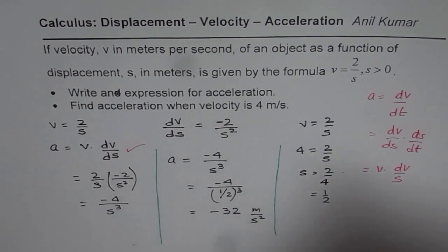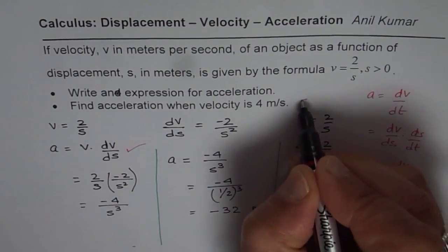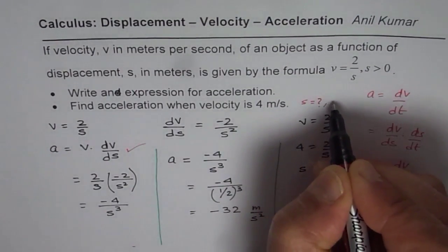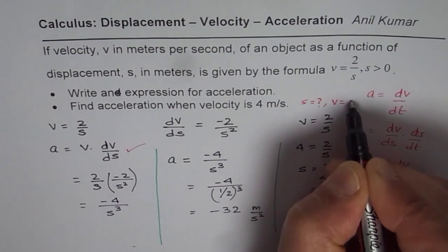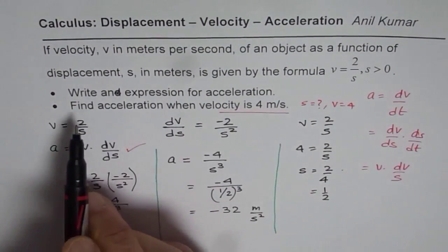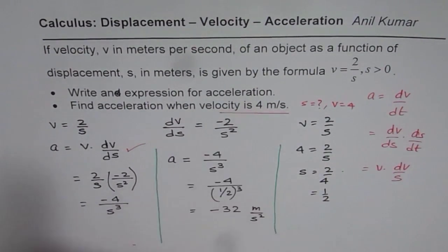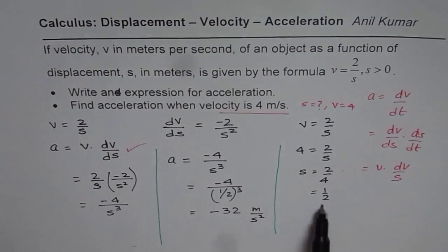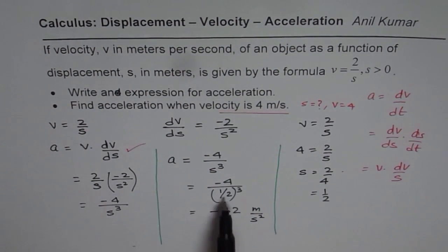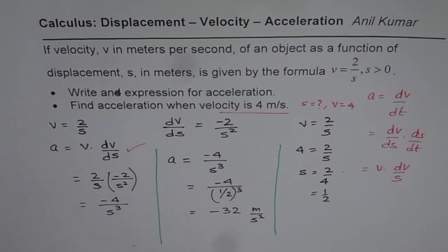What we found was s equals half when velocity equals 4 m/s. Since we need to find acceleration when velocity is 4 meters per second, s is half. Substituting half into the expression, we get our result of minus 32 meters per second squared. I hope that helps.